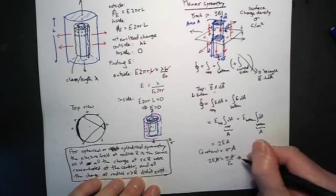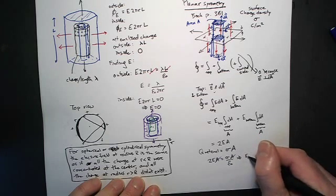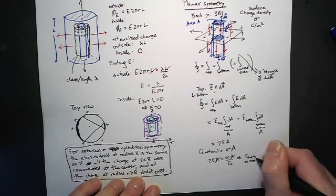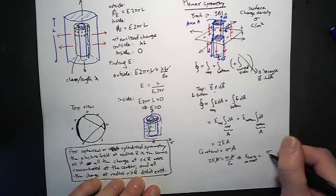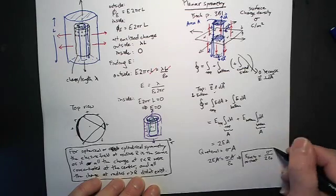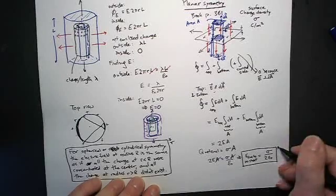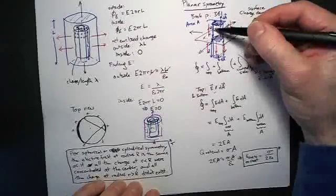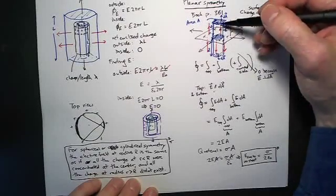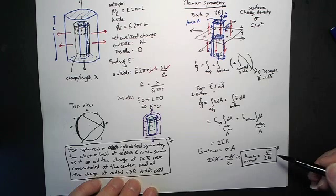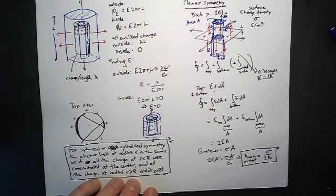And so this gives us that the electric field due to an infinite sheet is equal to sigma over two epsilon naught. And it does not surprise us now that there's nothing involving the height of our cylinder Z. That is, there's nothing that depends on distance away from the sheet, because we already knew that the electric field was going to turn out not to depend on distance. But now we have an expression for the strength of that field.